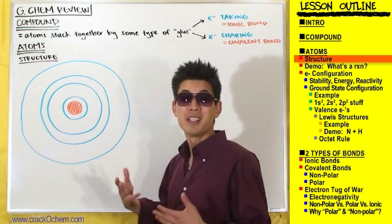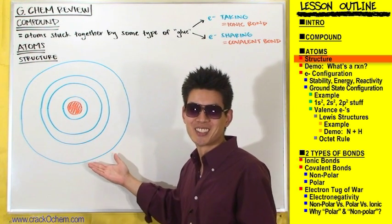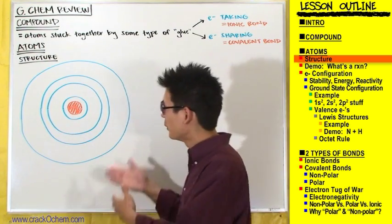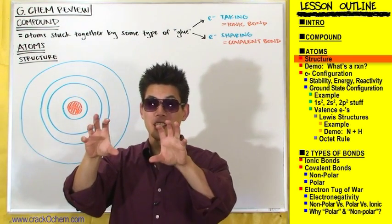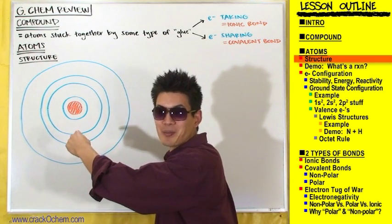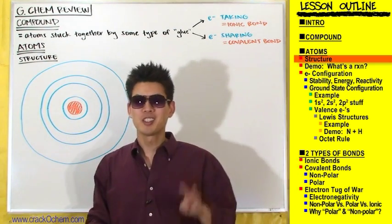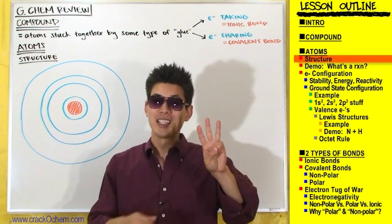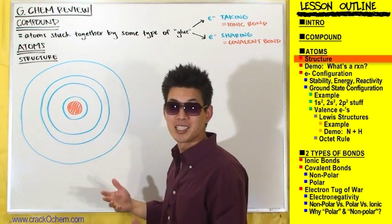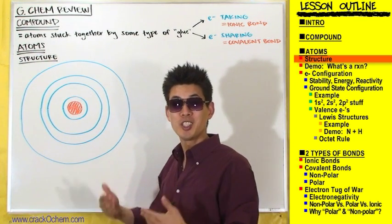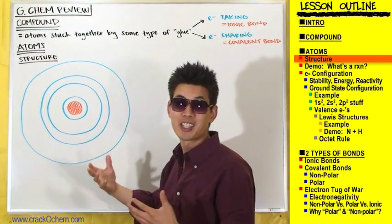Here we have a diagram of an atom. I know I told you an atom is a round sphere, and this has got to be the ugliest round sphere you've ever seen — I'm not that great at drawing circles, sorry. But you get the idea. What we're looking at is a cross-section of an atom — cut in half so you can see what's inside. We see a red inner core surrounded by blue rings. Protons and neutrons are found in this red inner core, and electrons are on the outside.